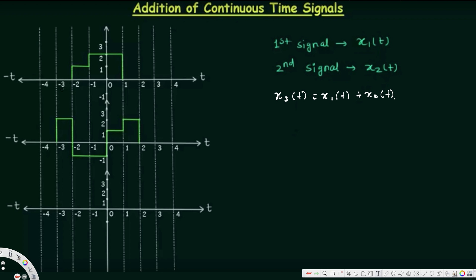To add these two together, we are going to pick each interval. We can start with negative 3 to negative 2, because the second graph is starting from negative 3, and end it at 2 because the second graph is ending at 2. We are going to take all the intervals and add them together.